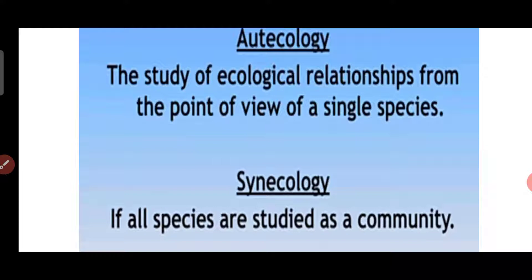Auto-ecology — the term 'auto' means self. Autecology is a branch of ecology which studies a particular individual organism and their environment, including that organism's evolution, behavior, habitat, life history, and food.